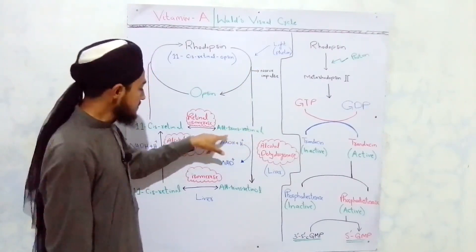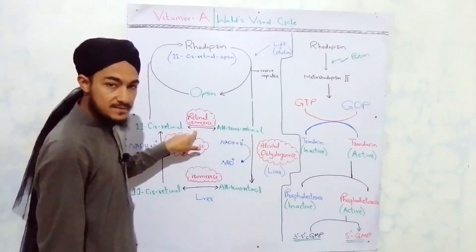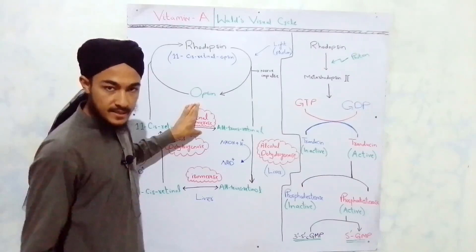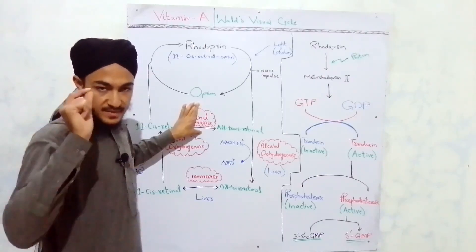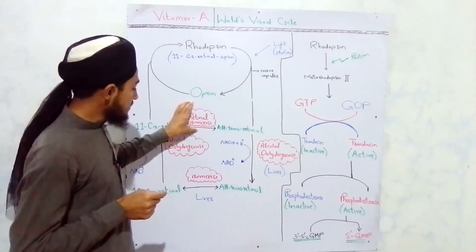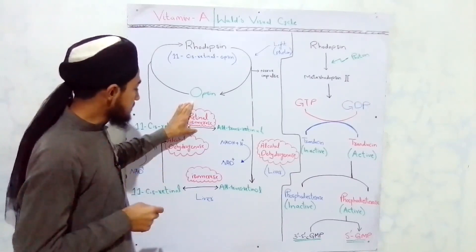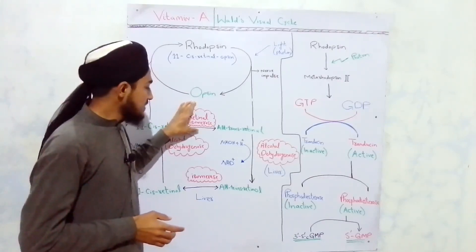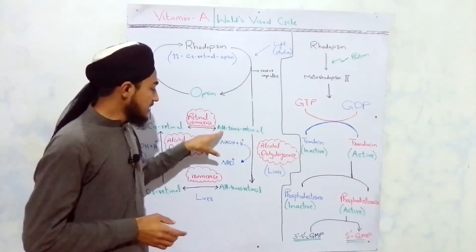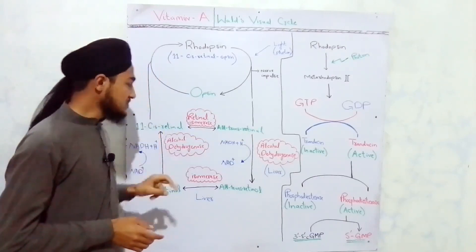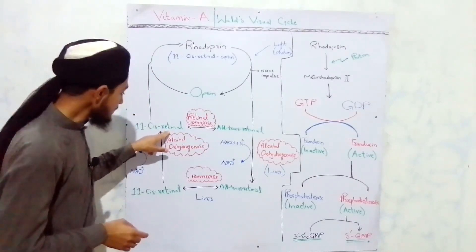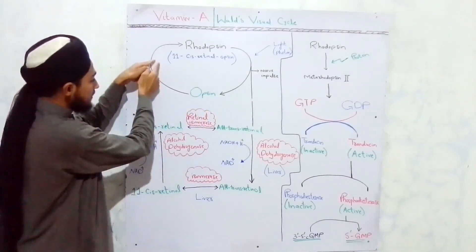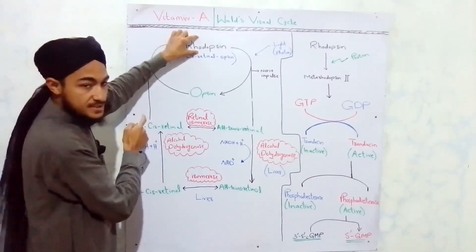The all-trans retinal is isomerized by the enzyme retinal isomerase, which is present in the retinal epithelial cells — the epithelial cells in the retina of our eye. This retinal isomerase enzyme isomerizes all-trans retinal into 11-cis retinal. This 11-cis retinal then combines again with opsin to re-synthesize rhodopsin.